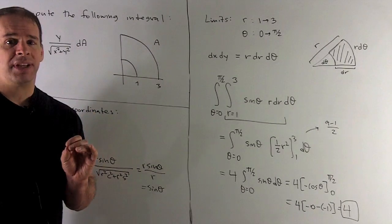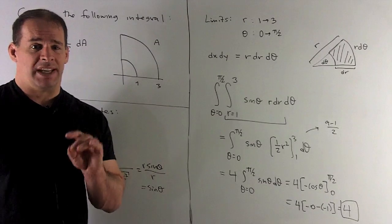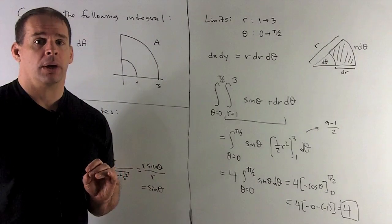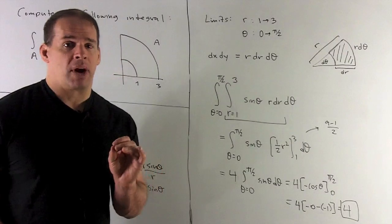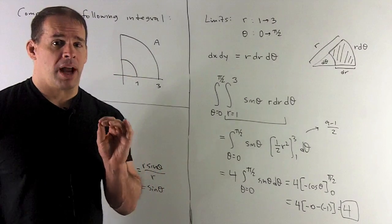Only thing left, element of integration. So, this is dx dy in terms of polar. That's going to be r dr d theta. We can memorize that, or you can memorize the picture.